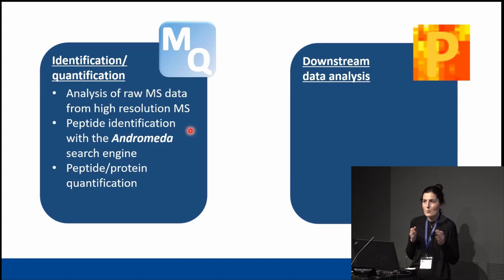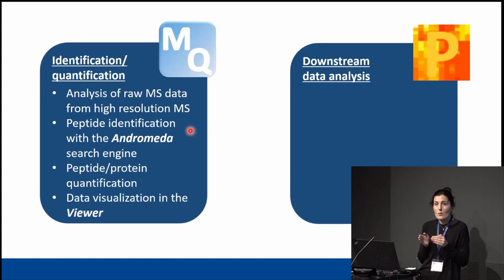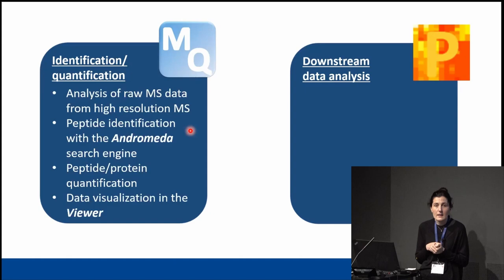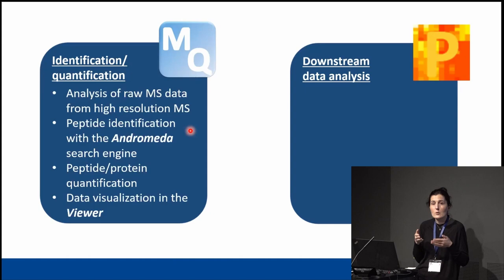We have a specific presentation about the output tables because it's quite important — it's what you get from MaxQuant and you should understand which table is which. Another nice feature in MaxQuant is the viewer. Even before you run your raw files, you can go to the viewer and see the spectra there. They're not annotated yet because you haven't run MaxQuant, but you can see all the spectra. Then after MaxQuant finishes running, you can go back to the viewer and see the identified, annotated spectra.